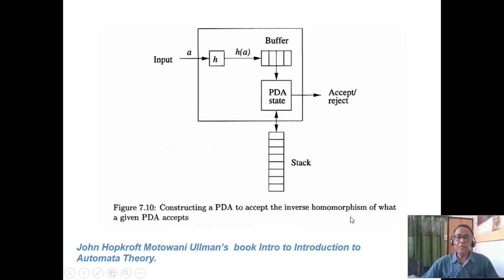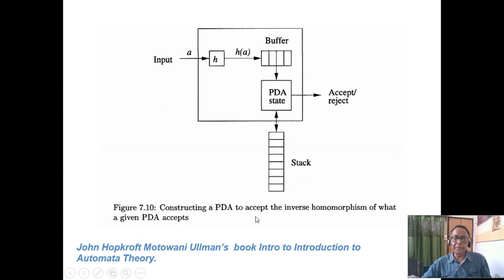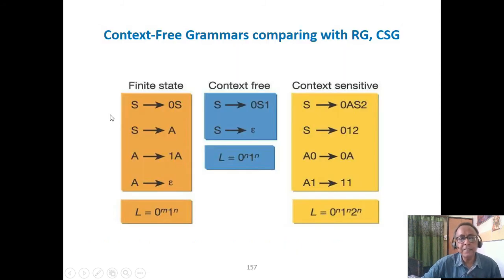Inverse homomorphism: homomorphism — any language is always closed under homomorphism, and inverse homomorphism is also closed for most languages. We have almost covered context-free language. Now we are shifting to context-sensitive grammar.